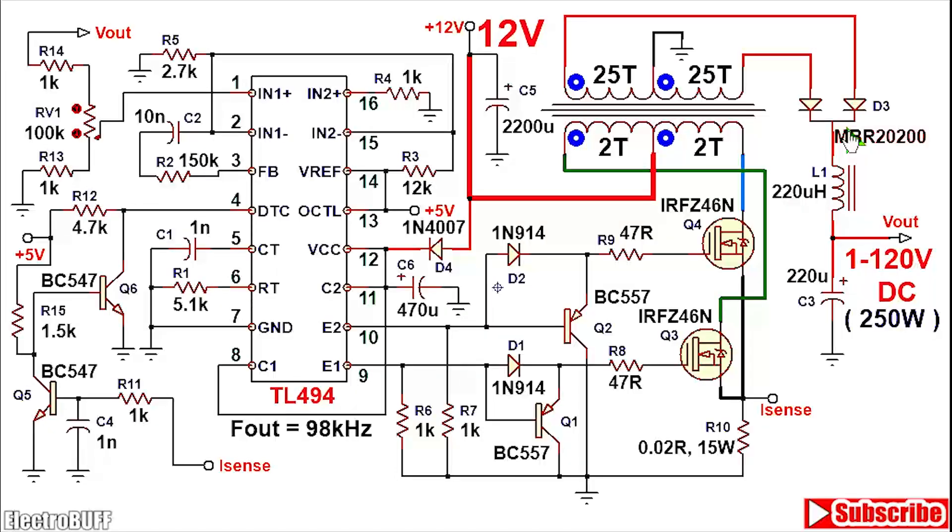The diode D3 is a high frequency Schottky diode. You can use the MBR2200. It's rated for a reverse breakdown voltage of 200V and a maximum peak current of 20 amperes. This is exactly what we need for this project.